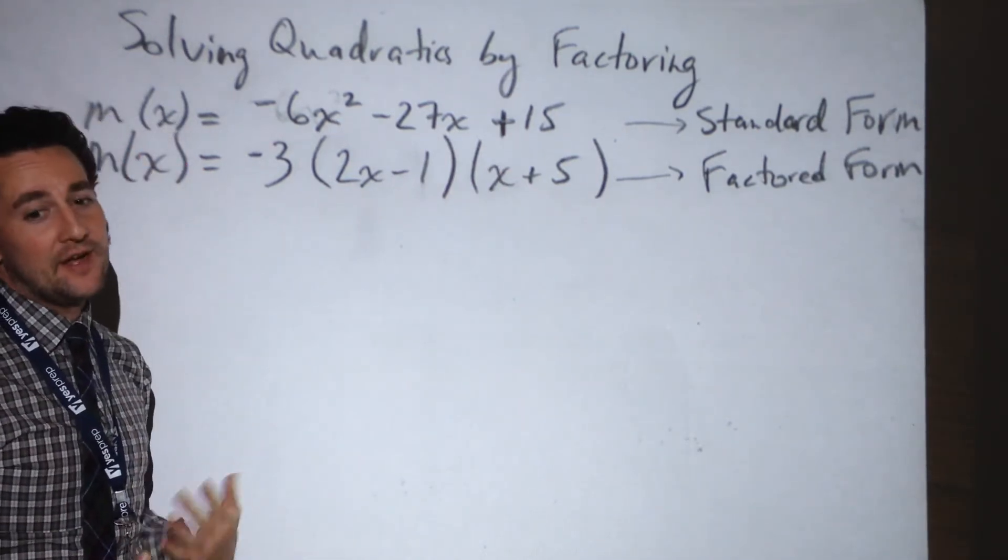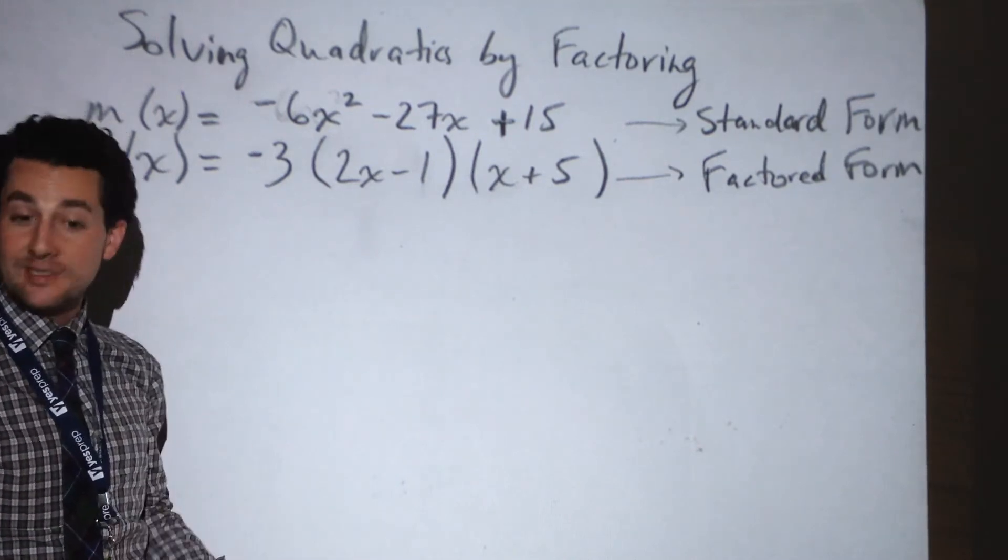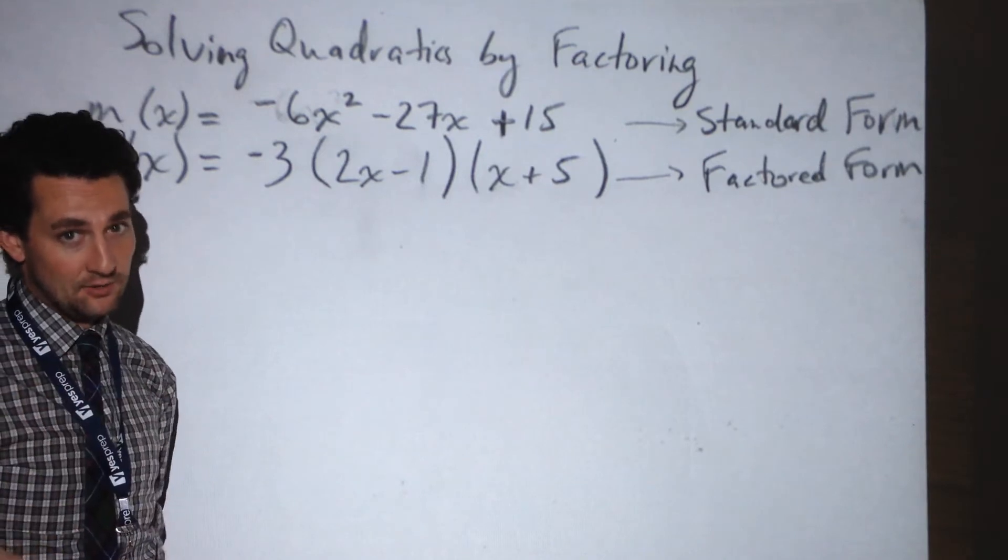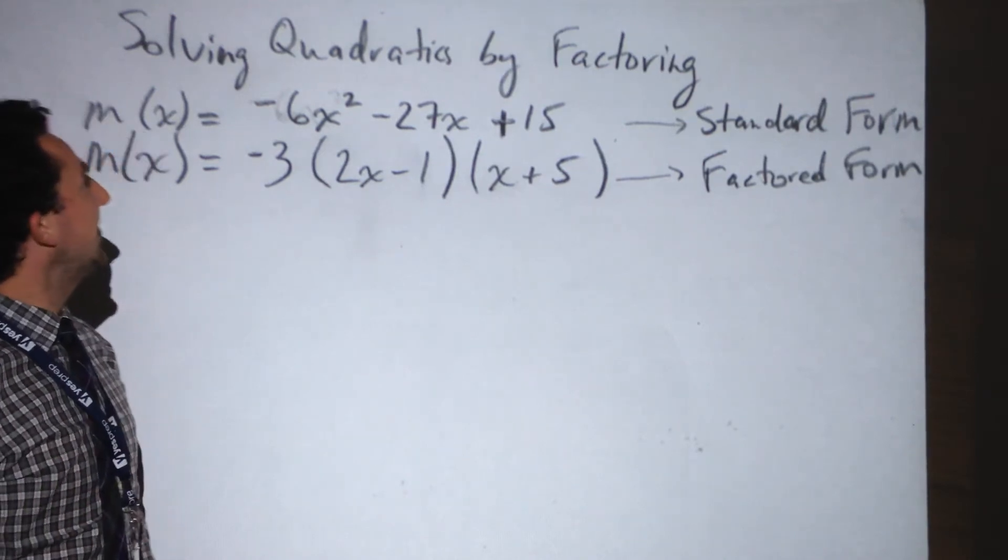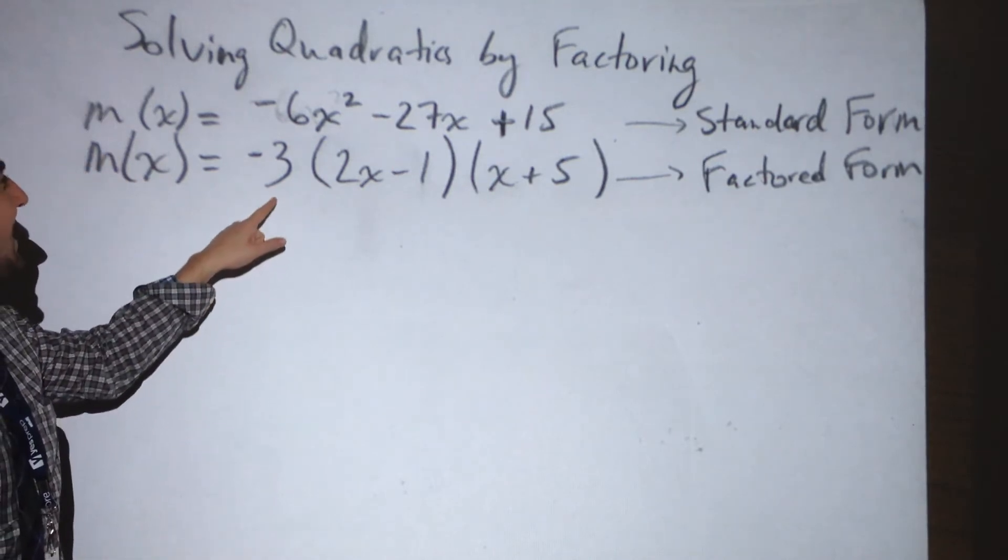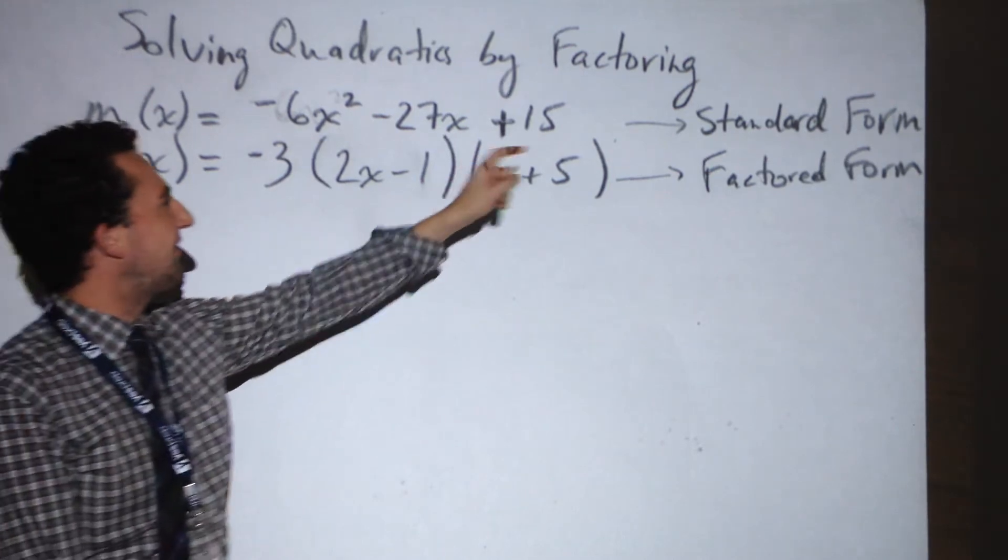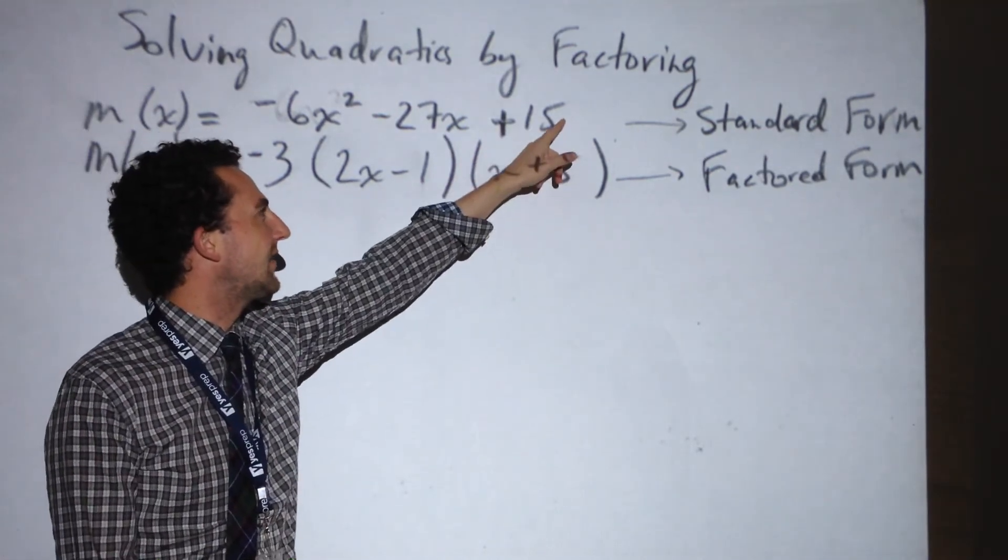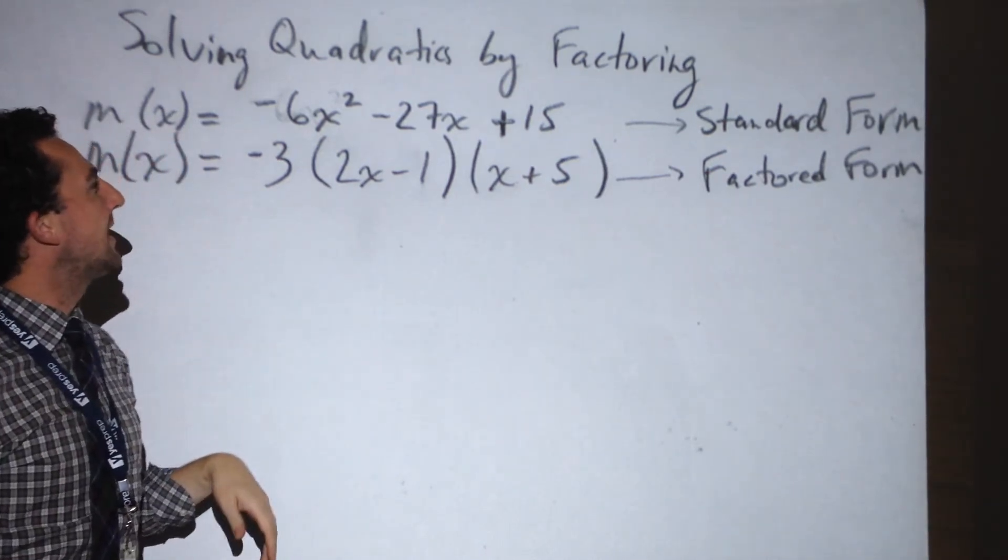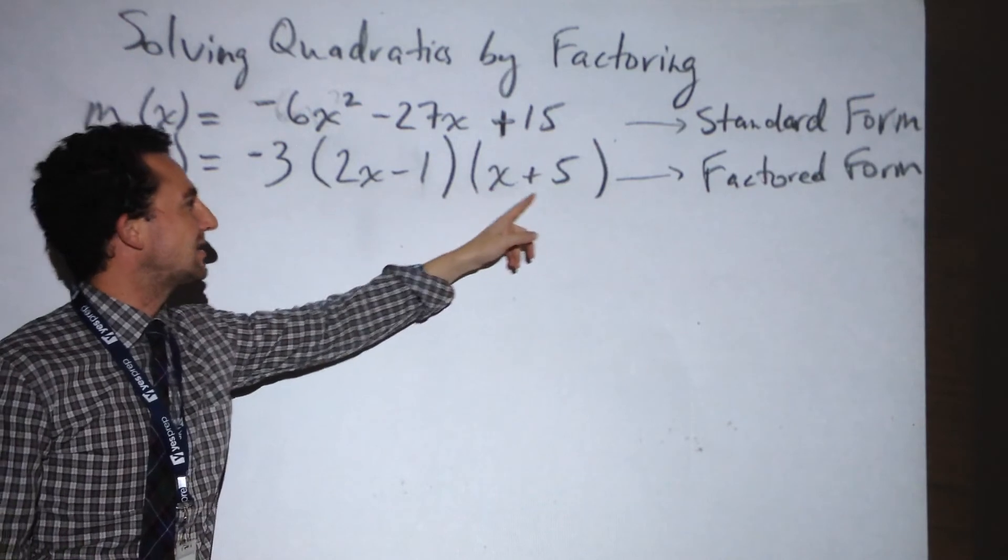Now, how do you factor it? We've done that in other videos. I expect you to be able to do that. Otherwise, you need to go and brush up on how to factor a quadratic. That's on you. This quadratic, when factored, has a greatest common factor of negative 3. Notice the greatest common factor does not have an x in it because 15 does not have an x. So we cannot divide each term evenly by x. And then what remains is two other factors, 2x minus 1 and x plus 5.